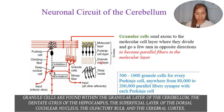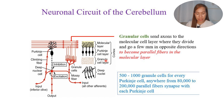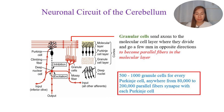Granular cells are found within the granular layer of the cortex, the dentate gyrus of the hippocampus, the superficial layer of the dorsal cochlear nucleus, the olfactory bulb, and the cerebral cortex. Cerebellar granule cells account for the majority of neurons in the human brain, with 500 to 1000 granule cells for every Purkinje cell, and anywhere from 80,000 to 200,000 parallel fibers synapse with each Purkinje cell. The granule cells send their axons to the molecular layer, where they divide and travel in opposite directions to become parallel fibers.